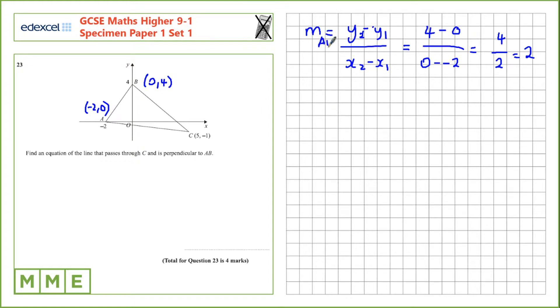That's the gradient M for A to B. We want the perpendicular to that, which is the negative reciprocal of this gradient. So that would be negative 1 over 2. The reciprocal of a number is just 1 over that number.